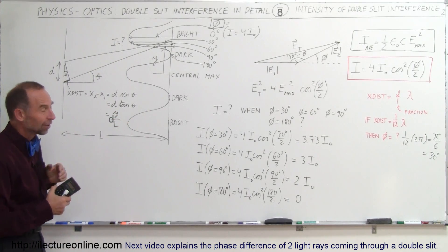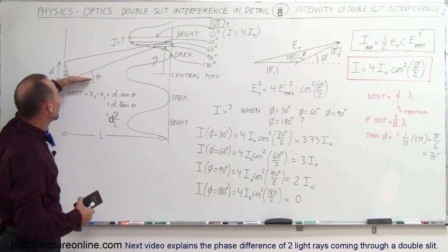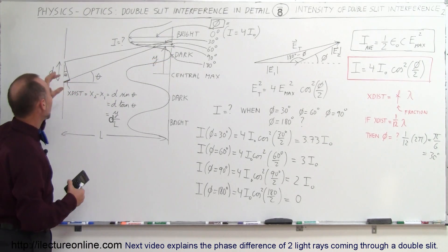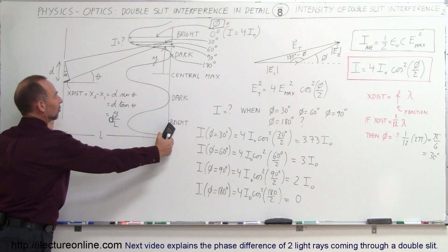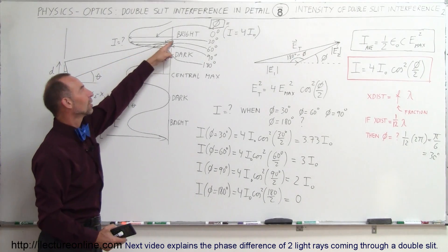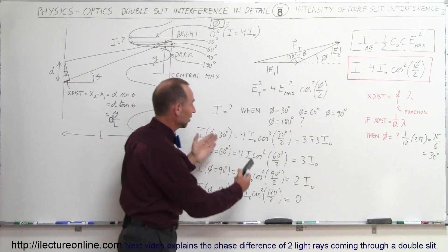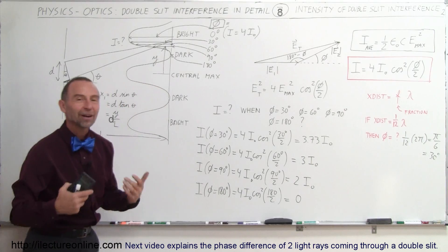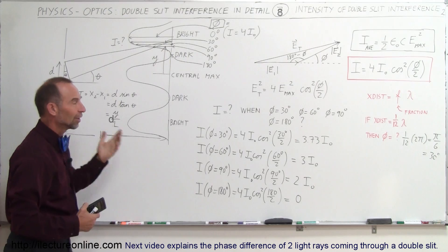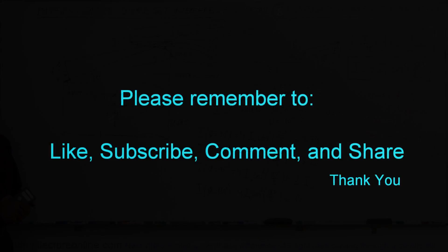What hasn't been shown yet is the relationship between the viewing angle theta and the phase difference phi. In a future video we'll show how — based on the slit separation and distance to the screen — you can determine the phase difference at any given angle, plug it into this intensity equation, and find the intensity anywhere along the screen as a function of theta.